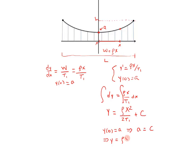Now, we actually have enough information to figure out the C and the T1. The first thing that we know is that Y at zero is A, which if I plug in A for Y and zero for X, I get C is equal to A. So clearly that means Y is equal to rho X squared over 2T1 plus A.